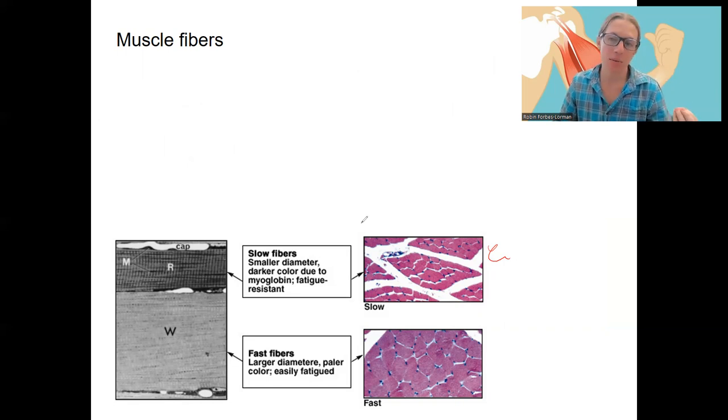There are two main categories of muscle fibers, and I'm going to break one down into two subcategories. The main thing to look at first would be slow twitch and fast twitch.